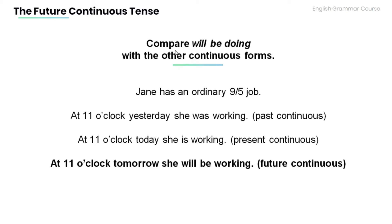Now let's compare will be doing with the other continuous forms. Jane has an ordinary 9 to 5 job. At 11 o'clock yesterday she was working — this sentence is in the past continuous. At 11 o'clock today she is working — present continuous. At 11 o'clock tomorrow she will be working — future continuous.